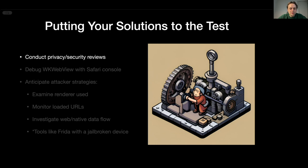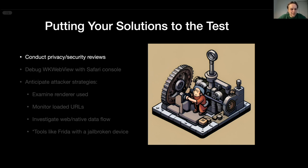Overall, put your solutions to the test. Let's say you've already implemented your code and you think you've mitigated all the security and privacy issues. Still, it's a good idea to conduct a full privacy and security review with engineers on your team — you can ask for help from backend and frontend engineers. With this particular topic, it's very important to be strict about details, because even a small mistake could cross out all of your hard work to make your application safe and secure.